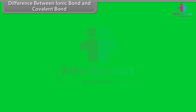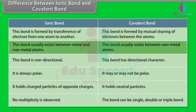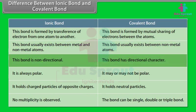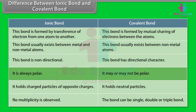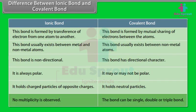Ionic bond is formed by transference of electrons from one atom to another, whereas covalent bond is formed by mutual sharing of electrons. Ionic bond usually exists between metal and non-metal atoms, whereas covalent bond usually exists between non-metal atoms. Ionic bond is non-directional, whereas covalent bond has directional character. Ionic bond is always polar, whereas covalent bond may or may not be polar. Ionic bond holds charged particles of opposite charges, whereas covalent bond holds neutral particles. No multiplicity is observed in ionic bond, whereas covalent bond can be single, double or triple.